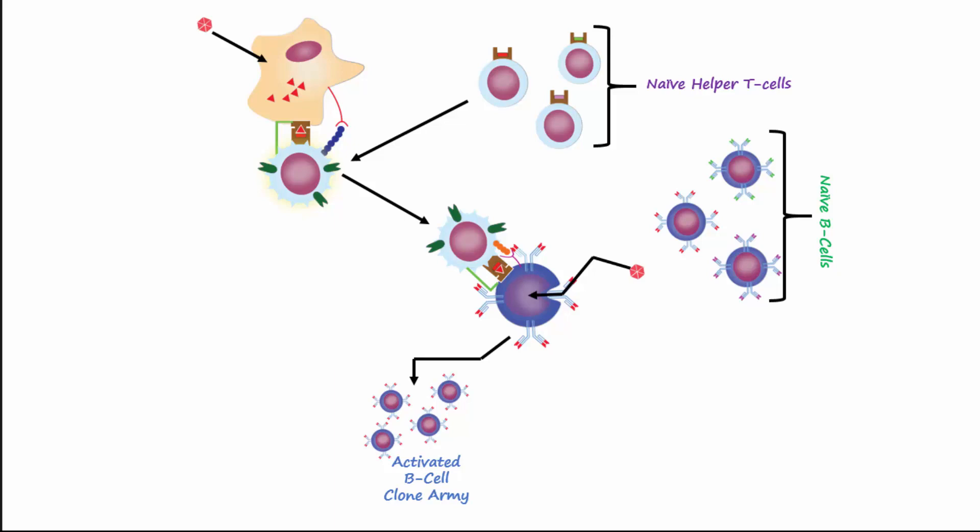Some of these cells will become activated memory B cells that are long-lived. Later in time, if the body is exposed to the same antigen, these memory cells can quickly be activated to become plasma cells for antibody production. B cells of the clone army will produce the antibody IgM during the plasmablast stage before they differentiate into plasma cells.